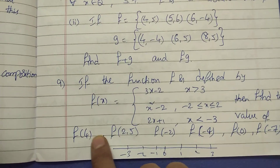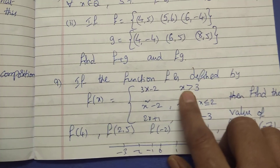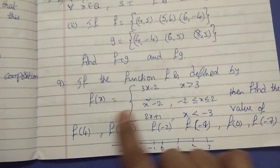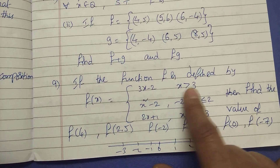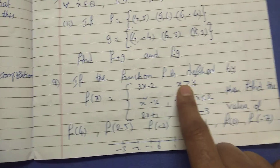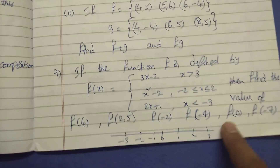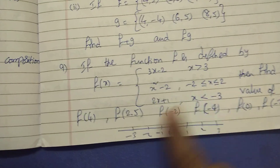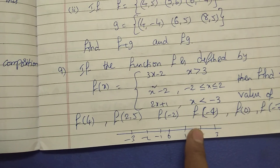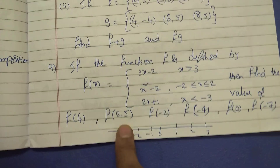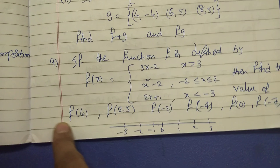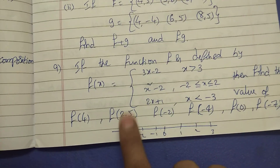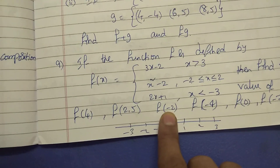F of 4: it falls in 3x squared, so the value is 3 and F of 4 equals 4. For F of 2.5, we need to check — the value 2.5 is given and we check minus 2 to 2 range. F of 2.5 does not exist. F of minus 2 does not exist — second function check. F of minus 4 does not exist; that value is not applicable.